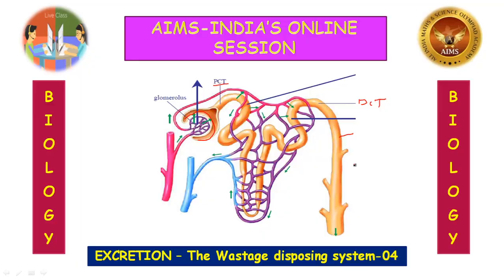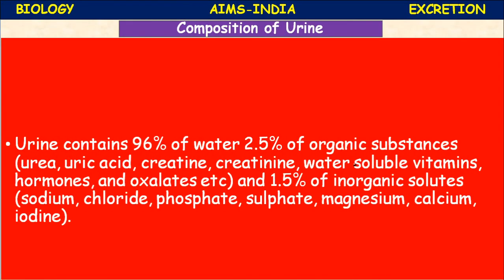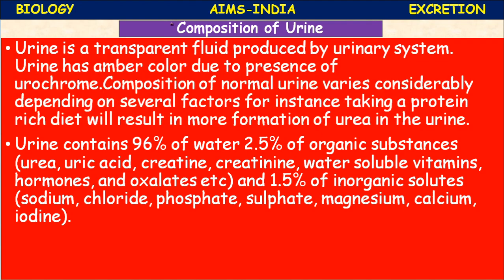Now let us discuss the composition of urine. Urine is a transparent fluid produced by the urinary system. It has an amber color due to the presence of a pigment called urochrome, giving it a pale yellow color. The composition of normal urine varies considerably depending on several factors.